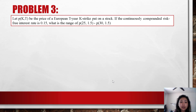Problem 3. Let P(K, T) be the price of a European T-year K-strike put on the stock. If the continuously compounded risk-free interest rate is 0.15, what is the range of P(25, 1.5) minus P(30, 1.5)?